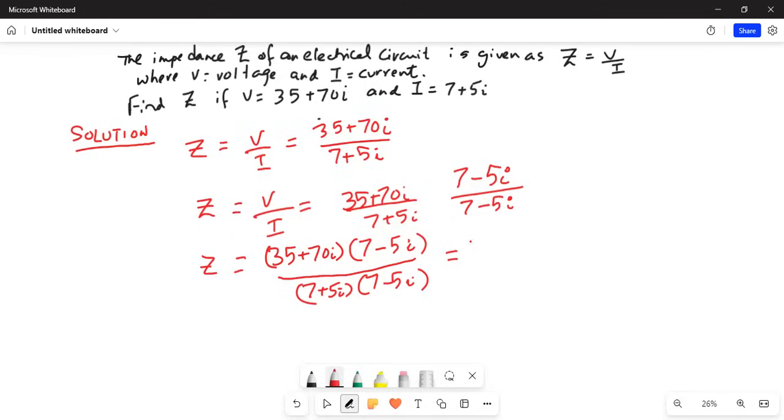We will use the FOIL method. FOIL method is first term, 35 multiplied by 7, then the outside which is 35 times minus 5i. Then the inside term which is 70i times 7, and then the two last terms which is plus 70i multiplied by minus 5i.